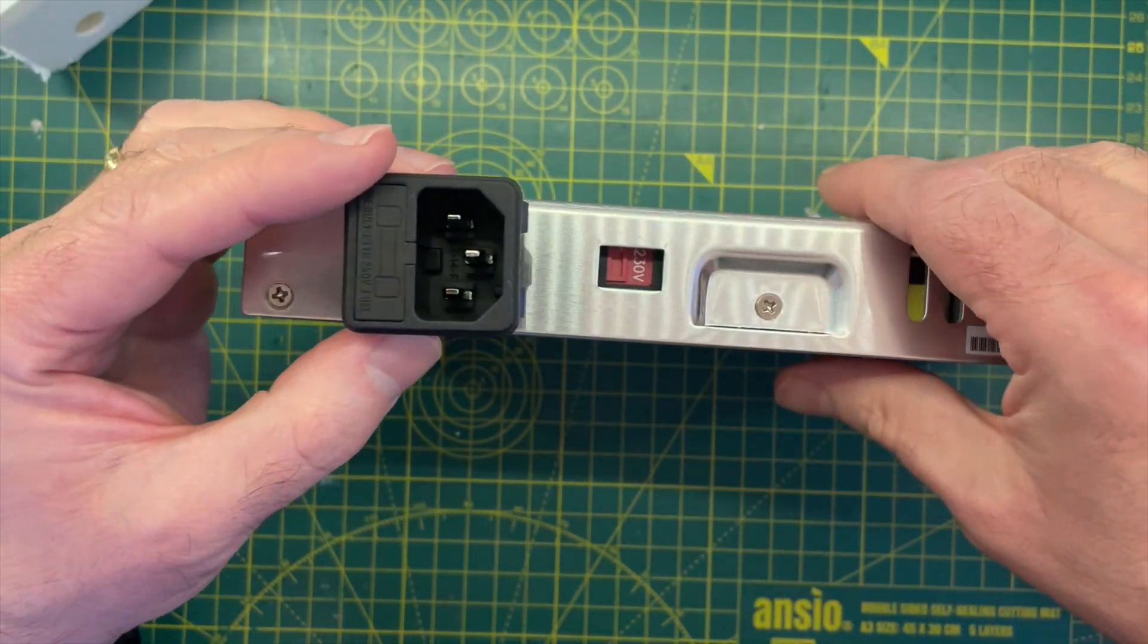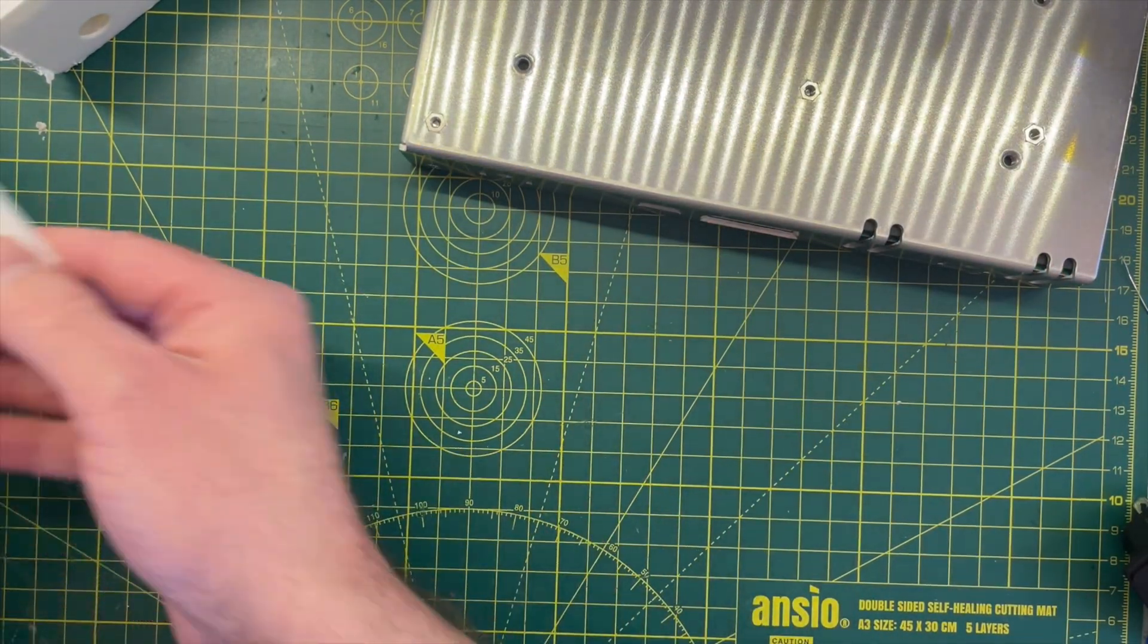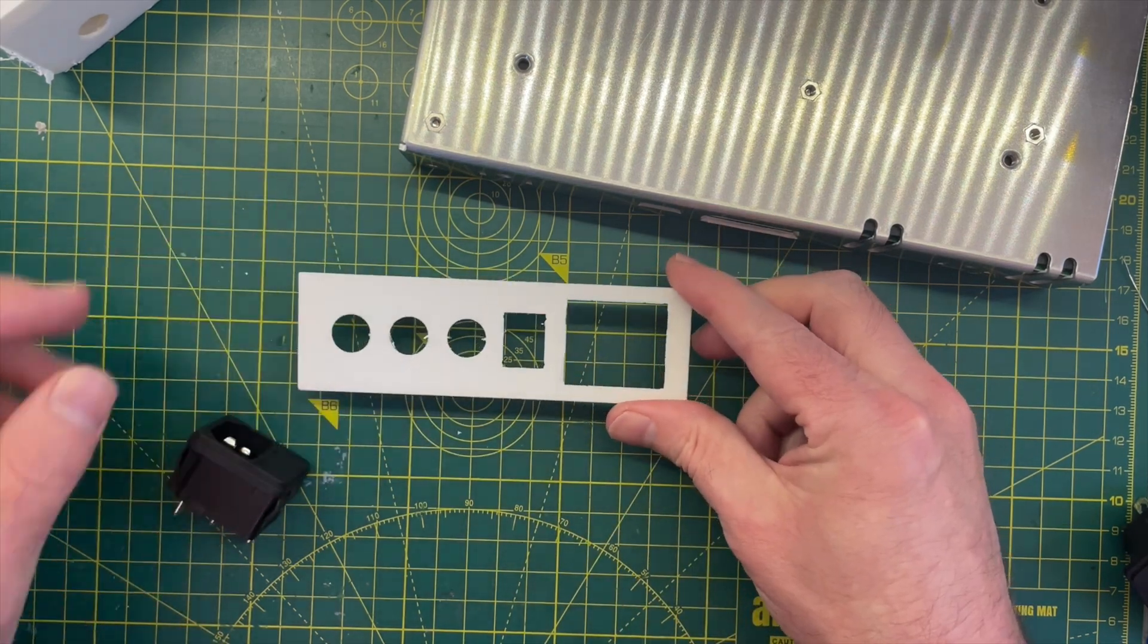So rather than spend seven hours printing a whole thing, which is what I had been doing, instead I just printed the front panel, which is much more sensible.